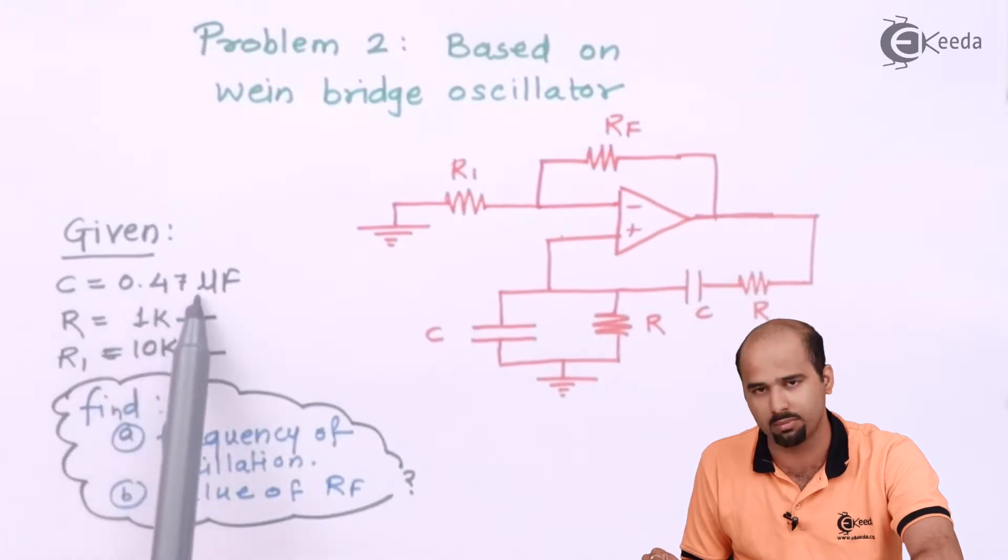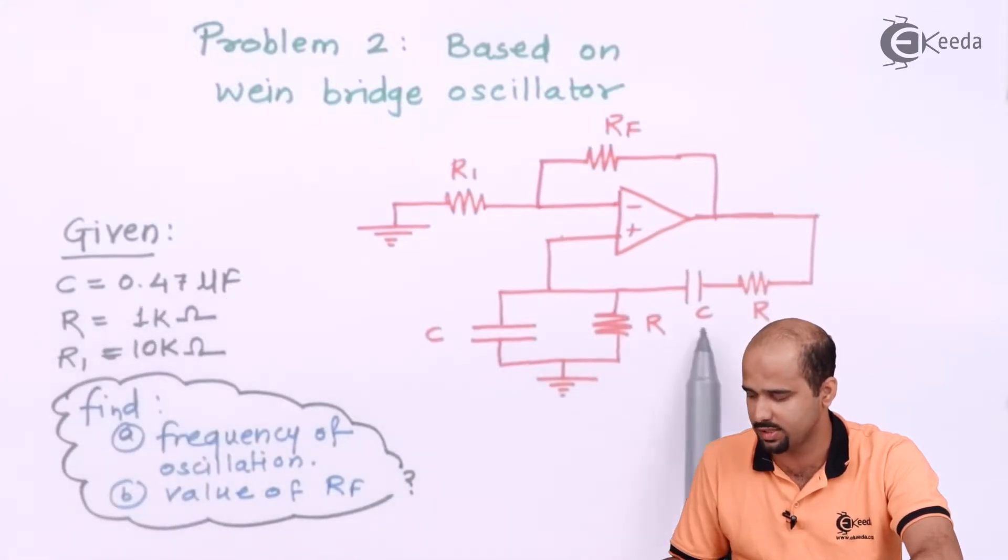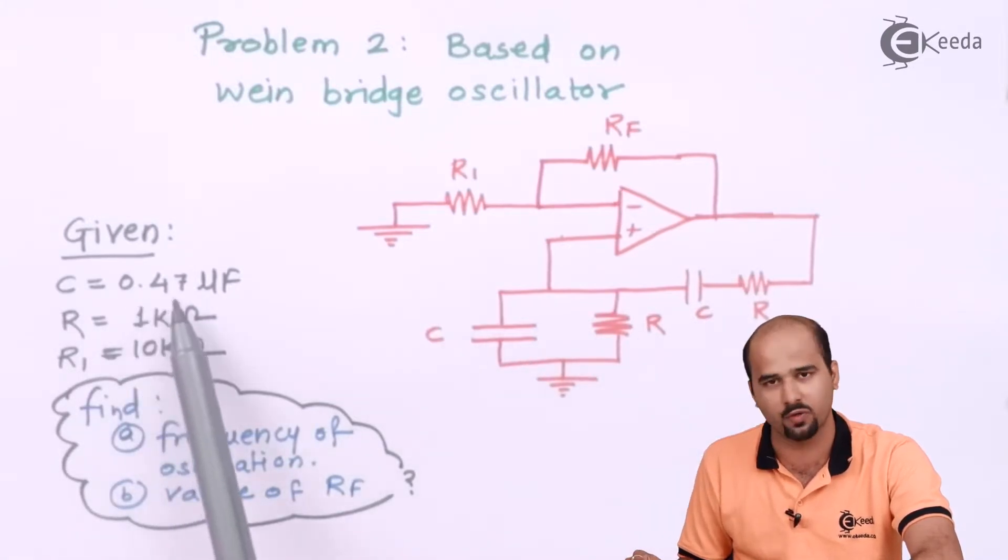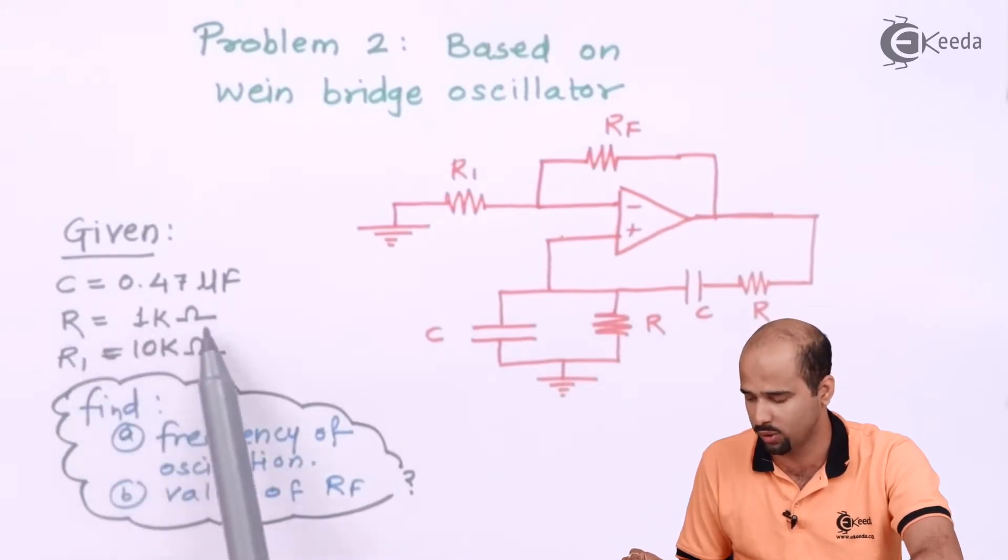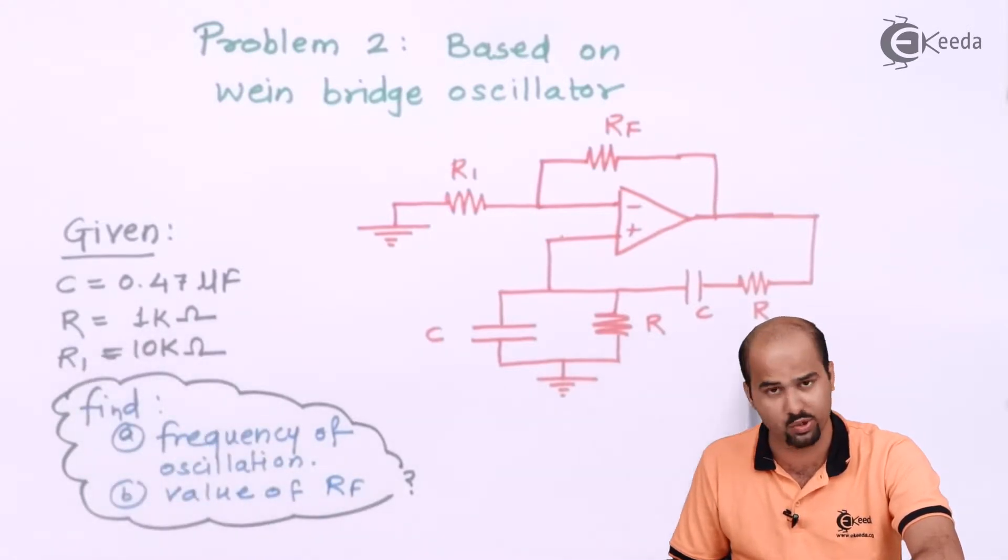C is equal to 0.47 microfarad. So both C values are 0.47 microfarad. R value is 1 kilo ohm. So this R value is 1 kilo ohm.